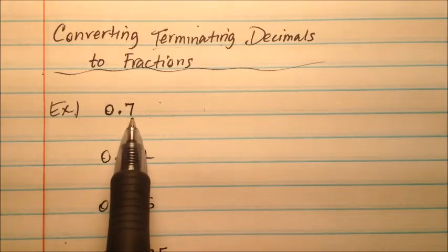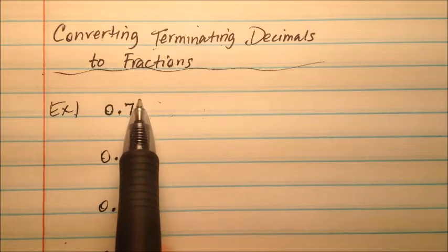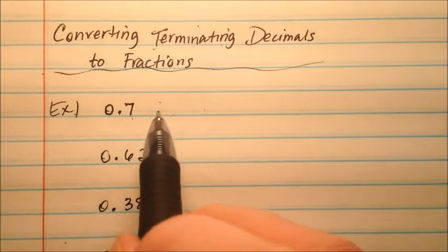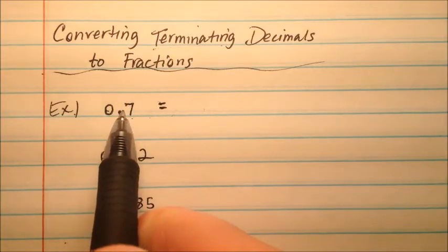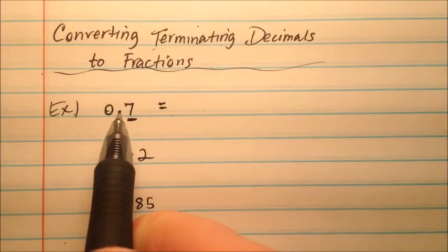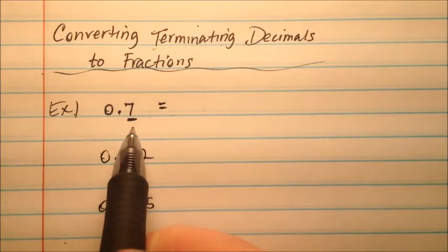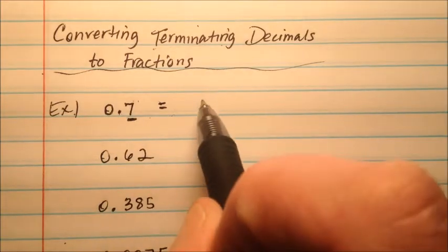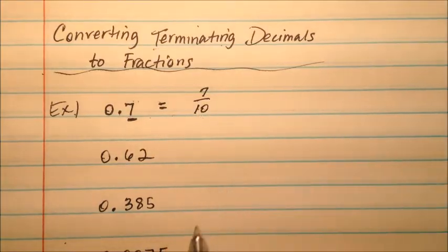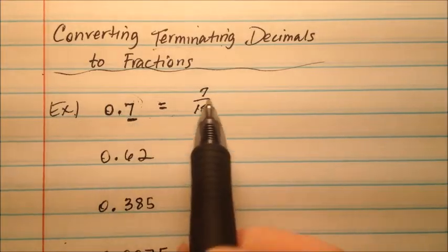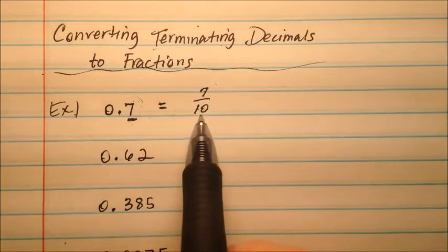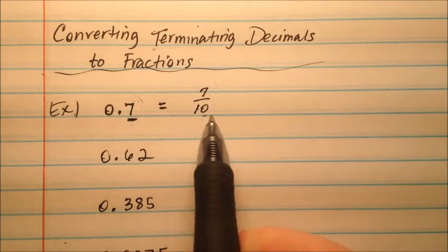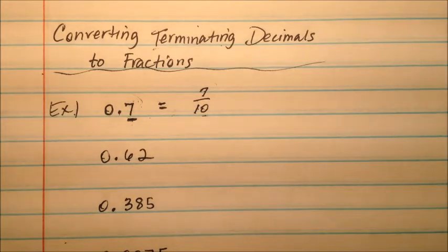Our first example is 0.7. On these terminating decimals, the way that we read the decimal out loud will help guide us to write it as a fraction. We have 0.7, so there's one digit behind the decimal place, and that place is called the tenths place. So we have 7 in that tenths place, so when we read this number, it'll be 7 tenths. As you read the decimal, it'll be the same as the fraction, 7 tenths. Notice we had one digit behind the decimal point, and we'll have one zero here in the denominator.